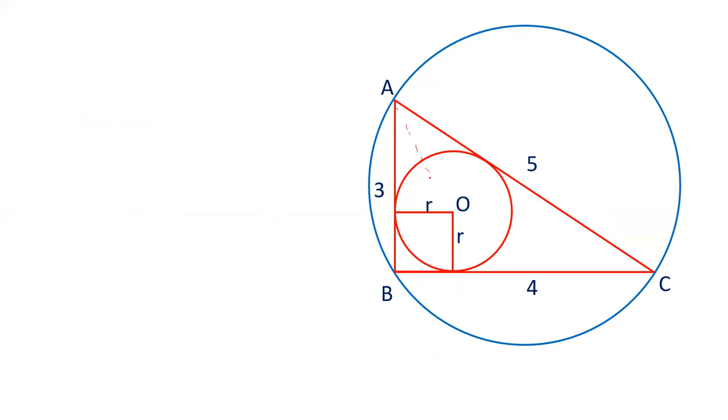If we join O to A, O to B and O to C, area of triangle ABC. AOB is equal to half base into height. Base is AB, height is OP. This is half AB into r. Similarly, area of triangle BOC is half BC into r. And area of triangle AOC is equal to half AC into r.